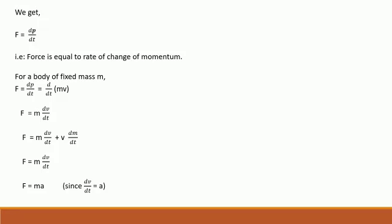For a body of fixed mass m, f is equal to dp by dt is equal to d dt of m v. Therefore, f is equal to m dv by dt. Therefore, f is equal to m a. Newton's second law also states that force is the product of mass and acceleration of the body.